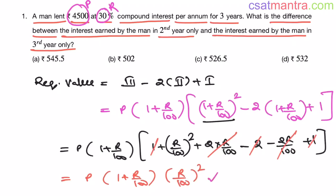Now, we have P into 1 plus R by 100 into R by 100 whole square. You can note down this formula. Again, this is some isolated case, my friends. So, you can use this formula to find out the difference between the interest earned by the man in second year only and the interest earned by the man in third year only.